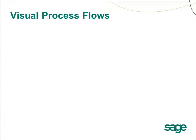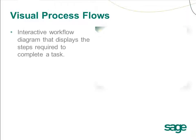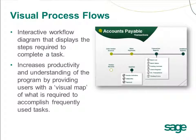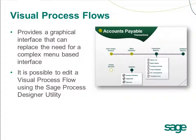Let's have a look at the Sage 300 ERP Visual Process Flows. A Visual Process Flow is an interactive flow diagram that displays the steps required to complete a task. It will hopefully increase productivity and understanding of Sage 300 ERP by providing end users with a visual map of what is required to accomplish frequently used tasks. It provides a graphical interface that can replace the need for a complex menu-based interface. Note that it is possible to edit Visual Process Flow diagrams using the Sage Process Designer utility.